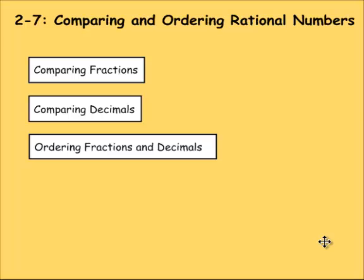For the last lesson of chapter 2, we're going to be comparing and ordering rational numbers. First, we're going to be comparing fractions, then comparing decimals, and then ordering fractions and decimals.